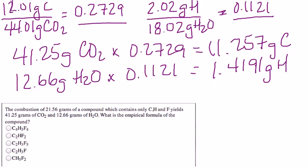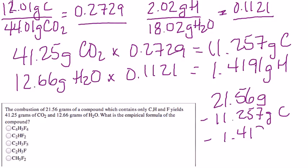So now you have the mass of carbon and the mass of hydrogen. Your original sample contains 21.56 grams total. So you subtract the 11.257 grams of carbon and you subtract the 1.4191 grams of the hydrogen and that means we have 8.8839 grams of fluorine.